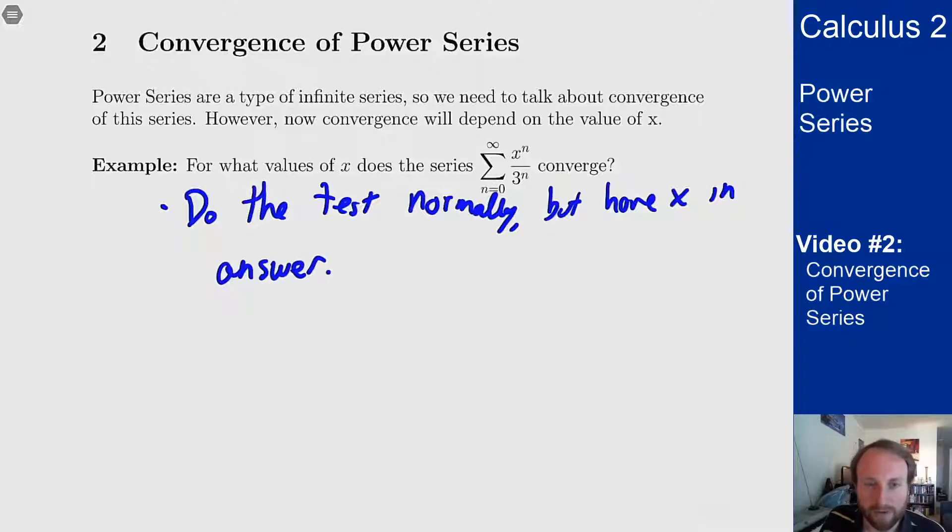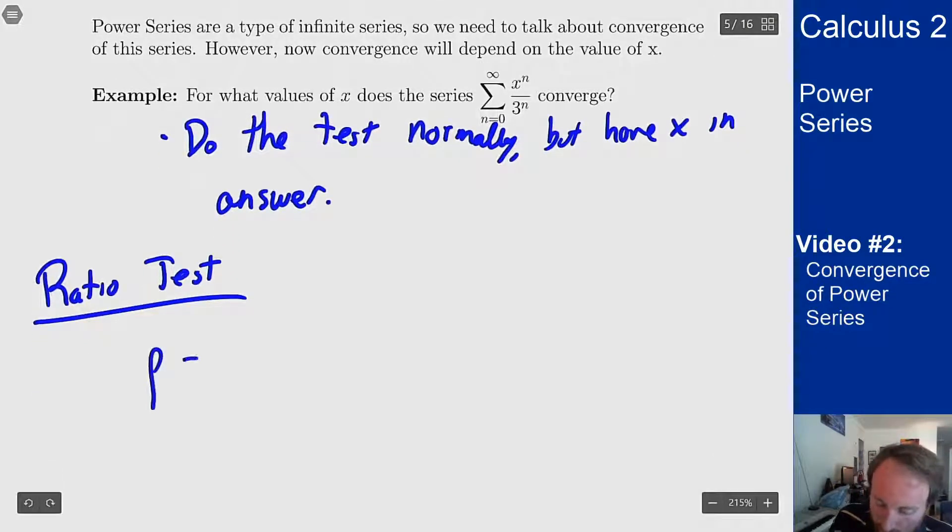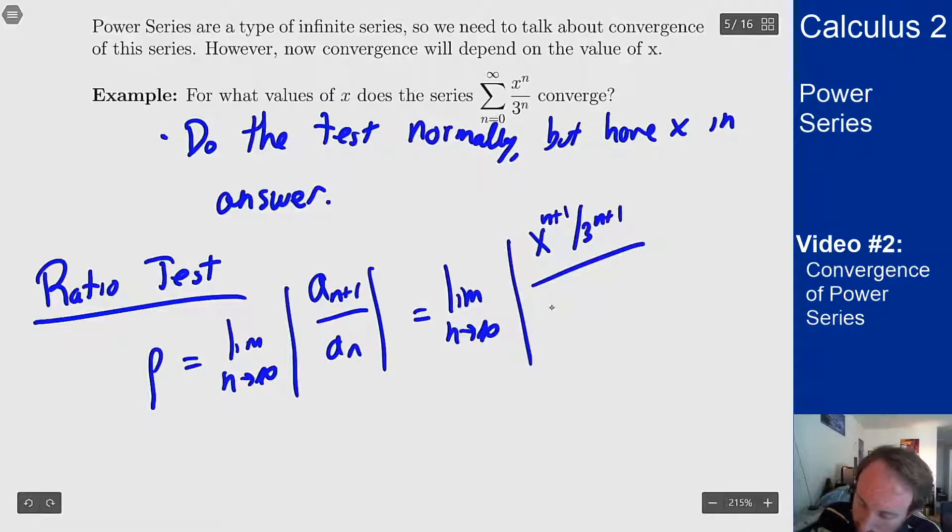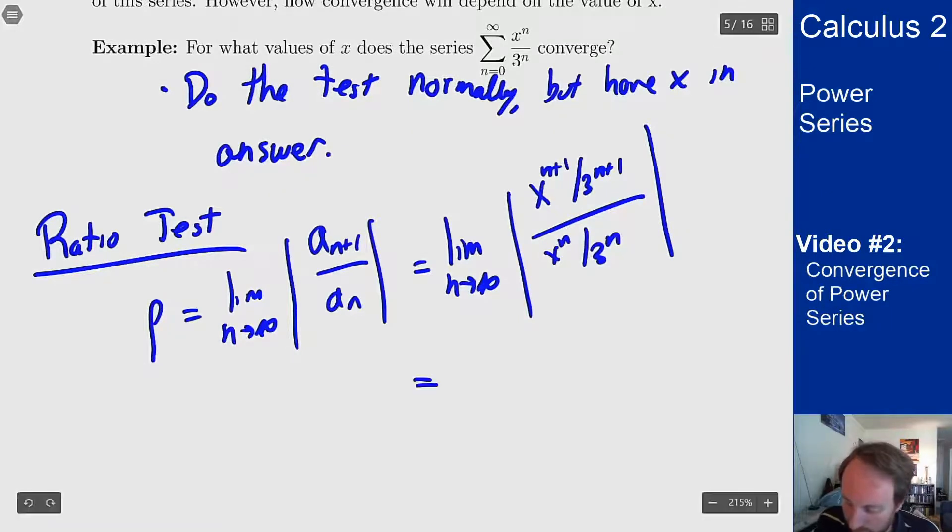So what do we get for the ratio test? My limit rho is limit n goes to infinity of a_{n+1} over a_n, which is for my series involving x: x to the n plus 1 over 3 to the n plus 1 over x to the n over 3 to the n. If I cancel things out here this becomes the limit as n goes to infinity of absolute value of x over 3 which is just x over 3 in absolute values.